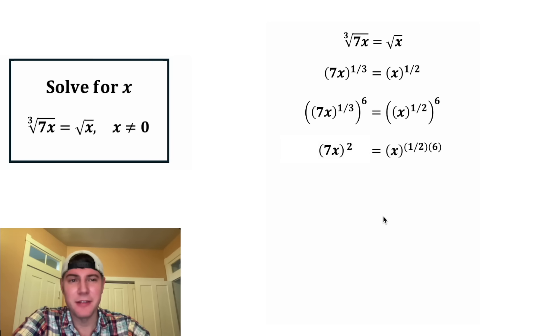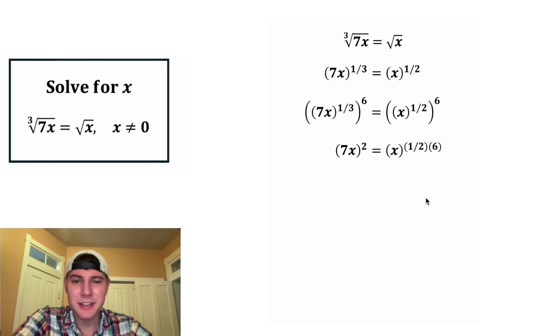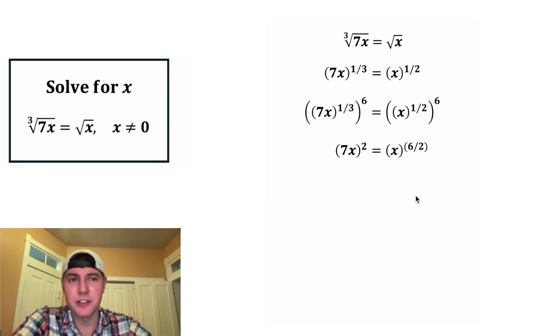So this will be 7x squared. And on the right hand side, one half times six is six halves, which is three. So we end up with x cubed.